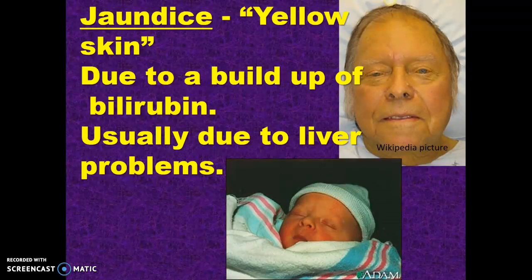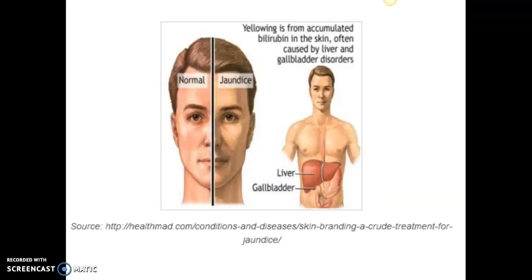With animals, you would slightly push on their upper eyelid and force the eye up so you can see the white of the eye, because dogs and cats have a lot of hair and you can't see their skin. The gentleman on the left is normal; on the right, jaundiced. With that, we end part one.